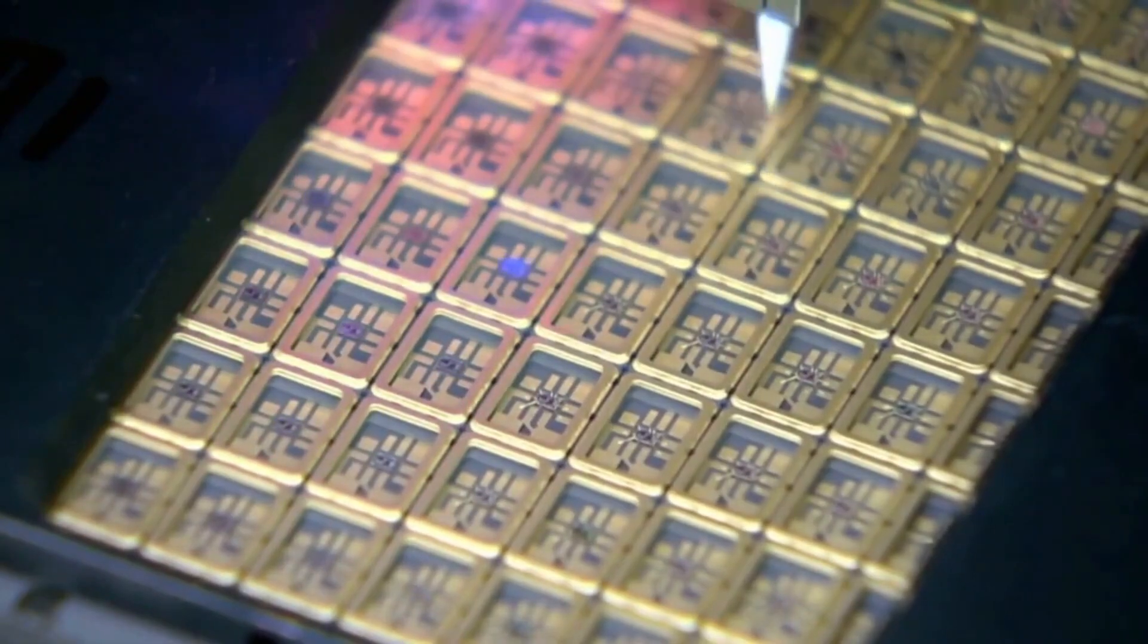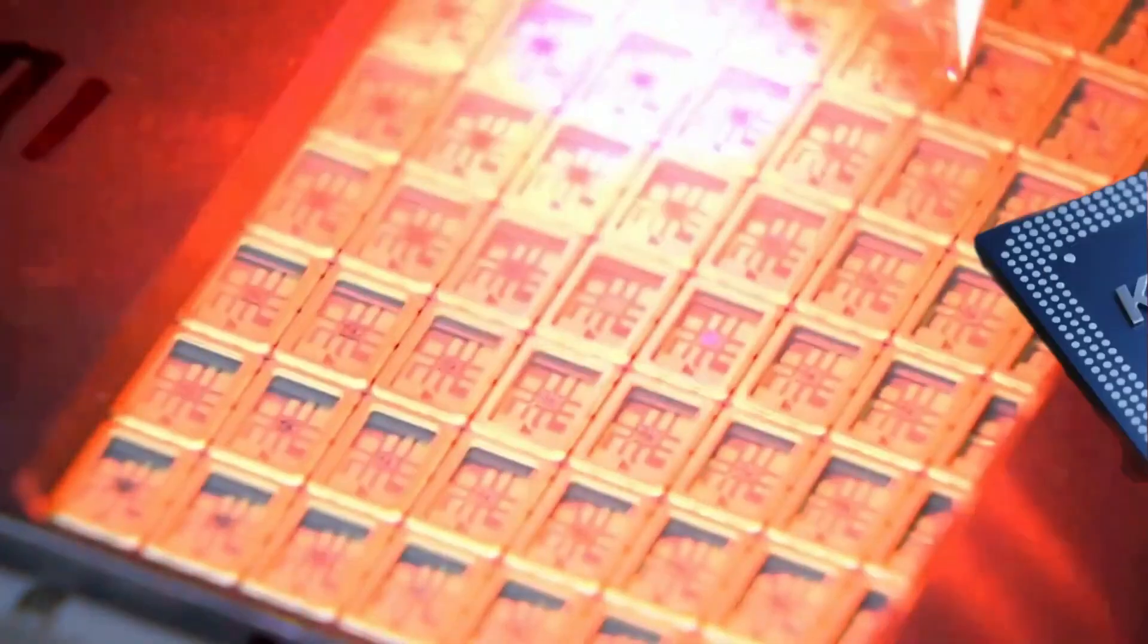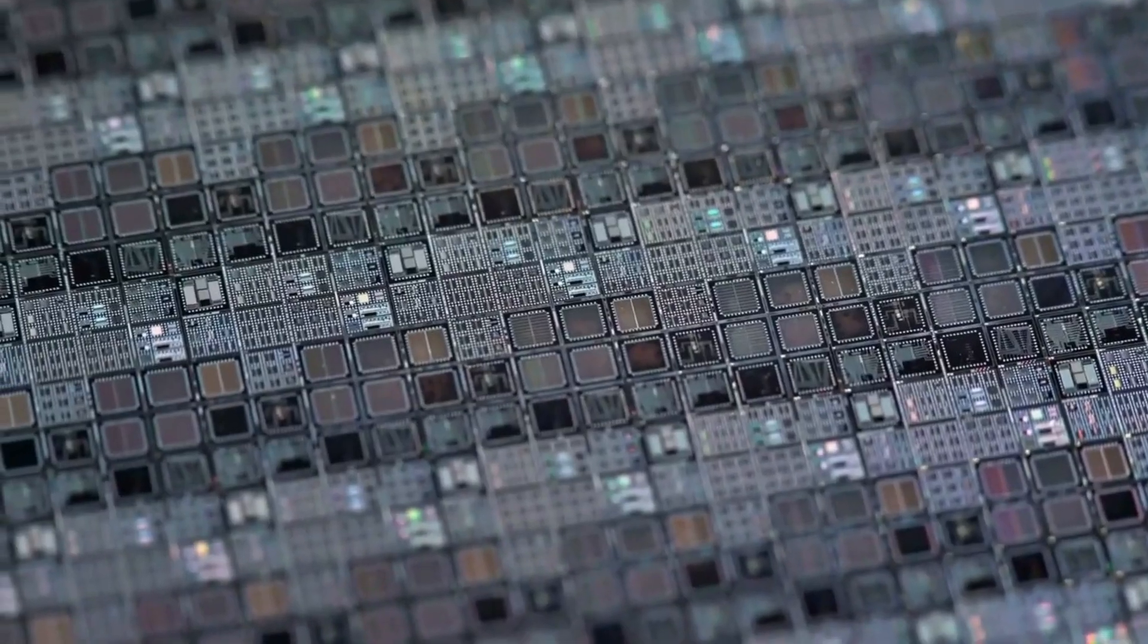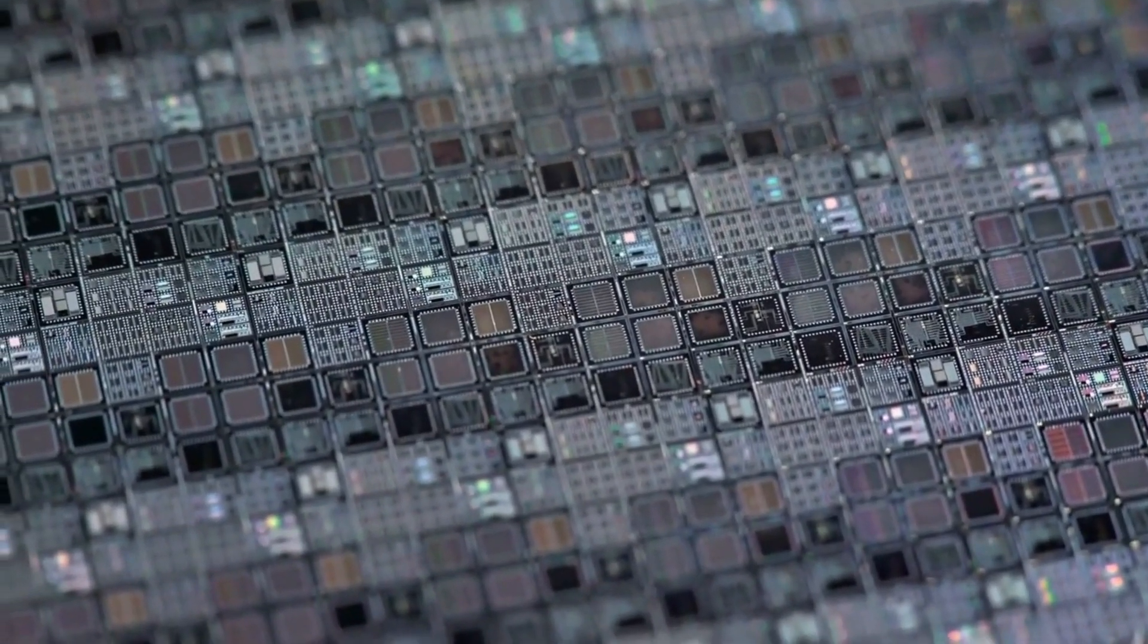But in 2025, Huawei surprised the world by announcing the Kirin 9030, a powerful 7nm-class chip made mostly inside China. This was something no one expected so soon.